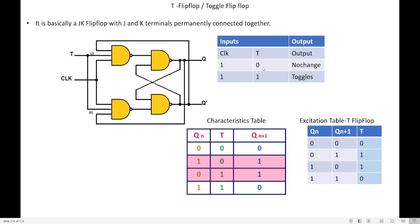The working of T flip-flop: when T is 0, no change; when T is 1, the output toggles. With the help of the characteristic table, we derived the excitation table. Thank you.